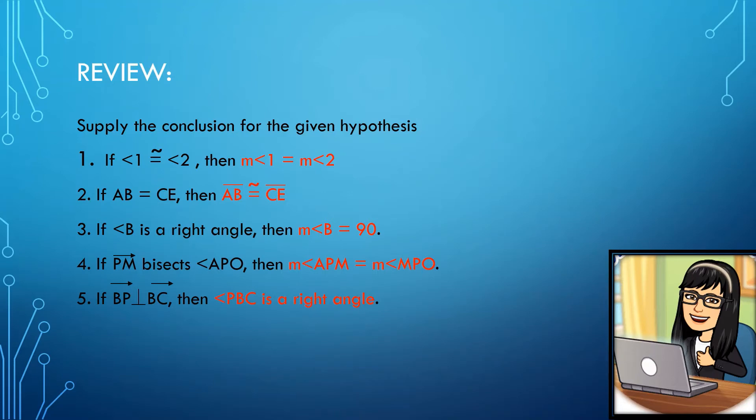Number one: if angle one is congruent to angle two — your keyword there is congruent. So if angles are congruent, based on the definition, they have equal measure. Your conclusion will be: measure angle one is equal to measure angle two.